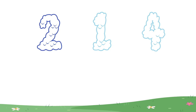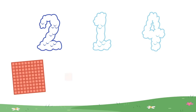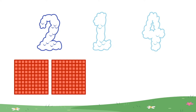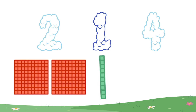This number is in the hundreds place. It tells us that there are two groups of a hundred. This number is in the tens place. It tells us that there is one group of ten.